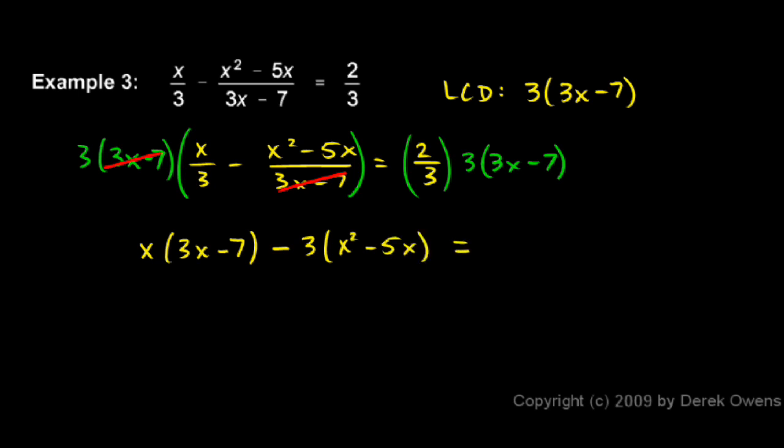And now the right side. When I multiply the 2 thirds times the 3 times 3x minus 7, you can see the 3's cancel. And I'm just left with 2 multiplied by the 3x minus 7. So the right side is 2 times 3x minus 7.